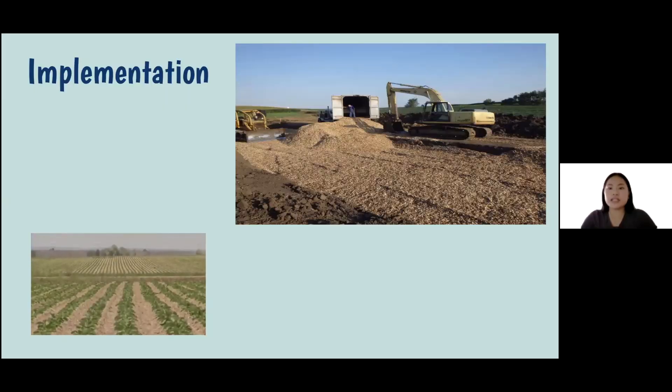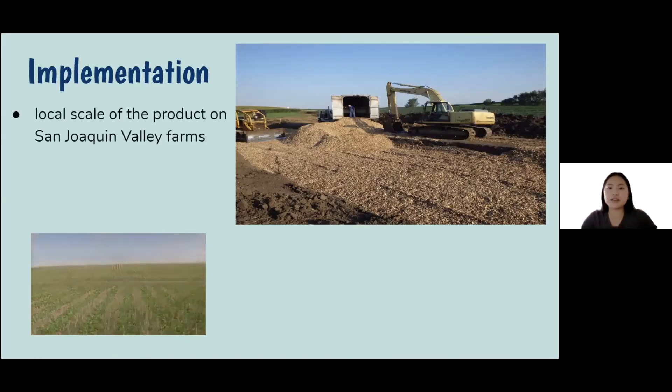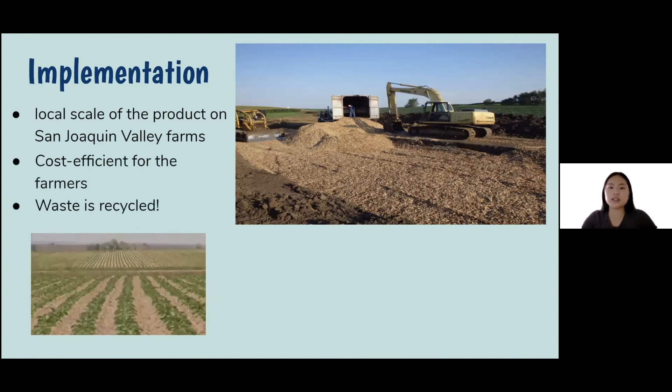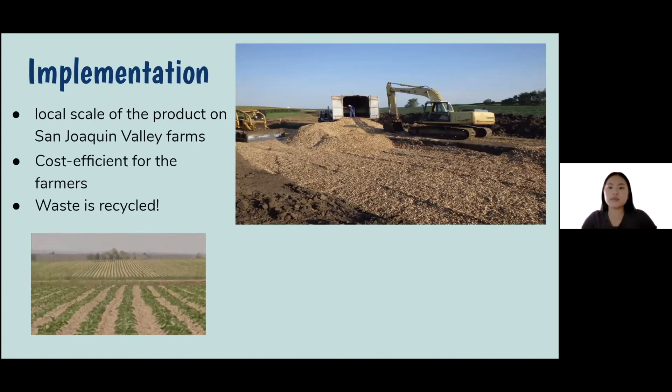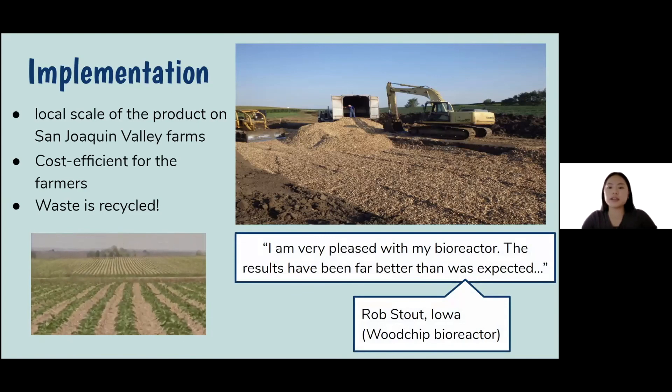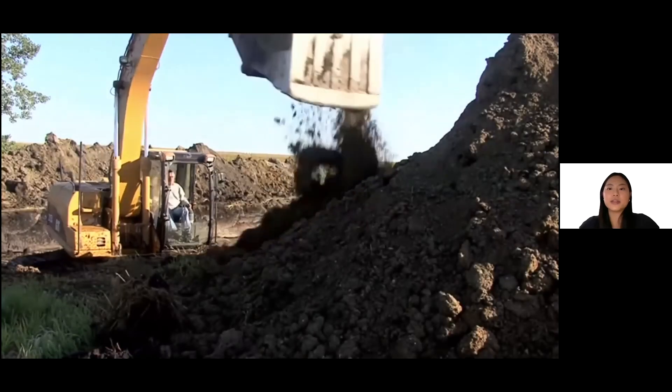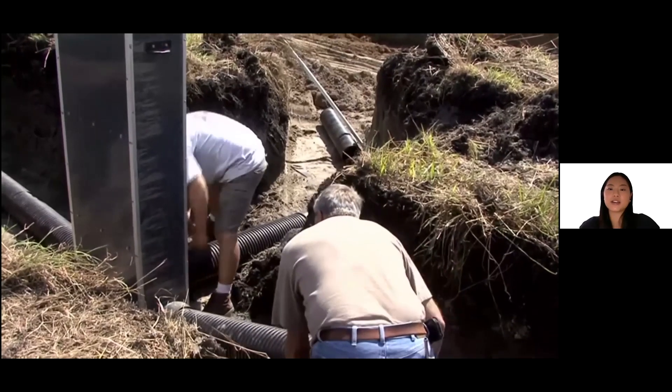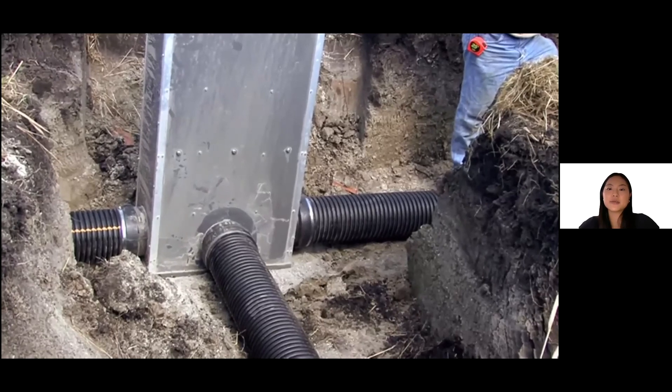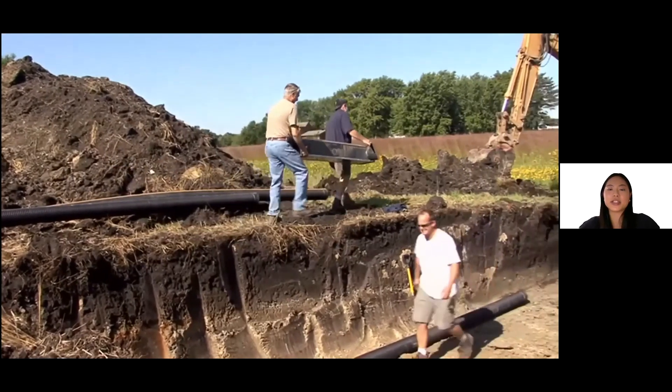Our product will be implemented on San Joaquin Valley farms, needing the use of heavy machinery. We would like to have a product available for farmers that is cost-efficient, easy to understand, and sustainable where waste is recycled. A similar bioreactor was installed in Iowa, using wood chips instead of microbial cellulose, and a farmer's review of it was very positive. In this clip, the wood chip bioreactor in Iowa is being installed, which would be a similar process to our idea. This system will impact the daily lives of our users and how they work.